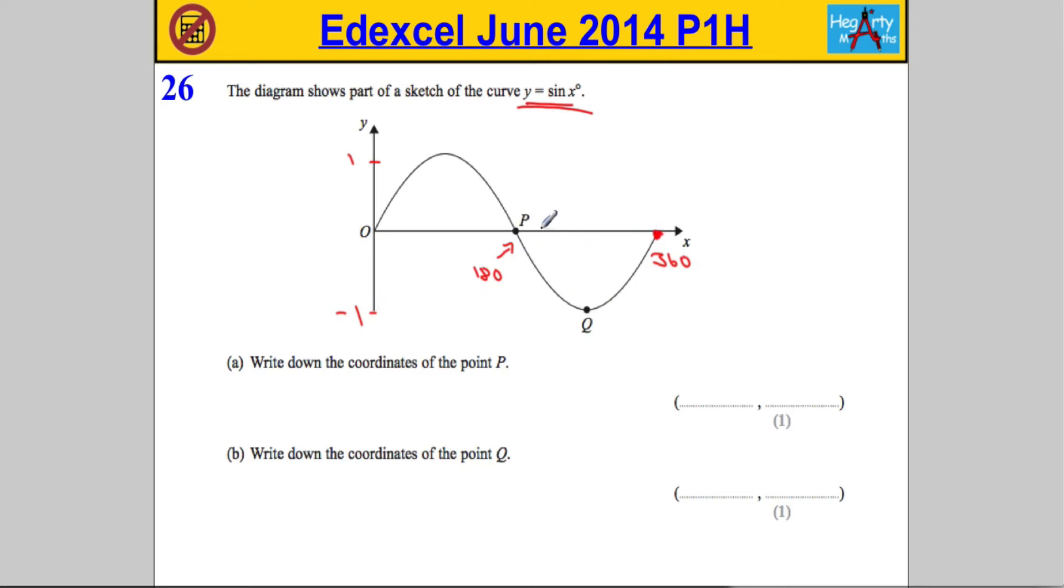Now what's halfway between 180 and 360? It's got to be 270. So we should have enough to answer this question. The x coordinate is 180 and the y coordinate is 0, so we get 180 and 0.